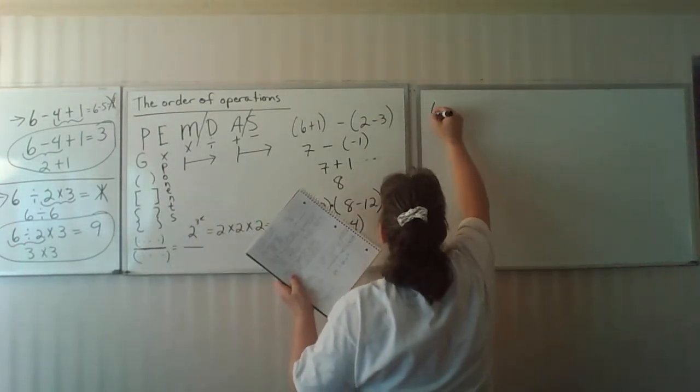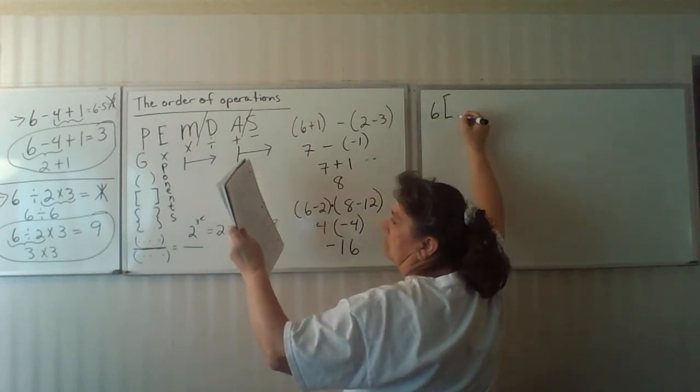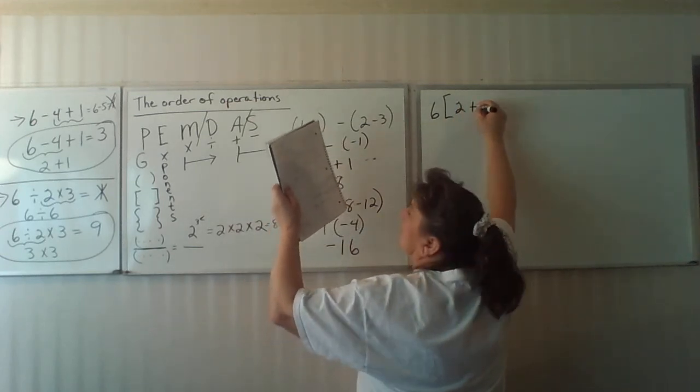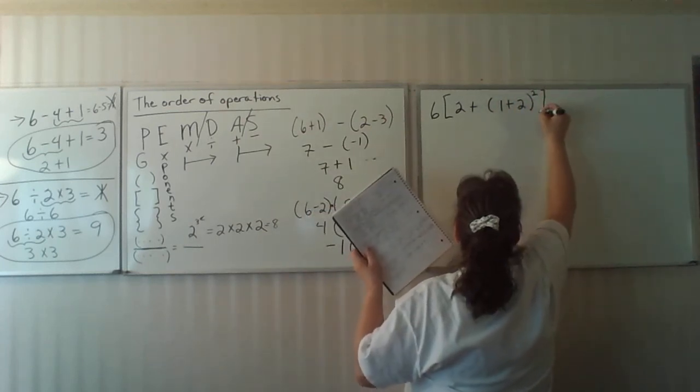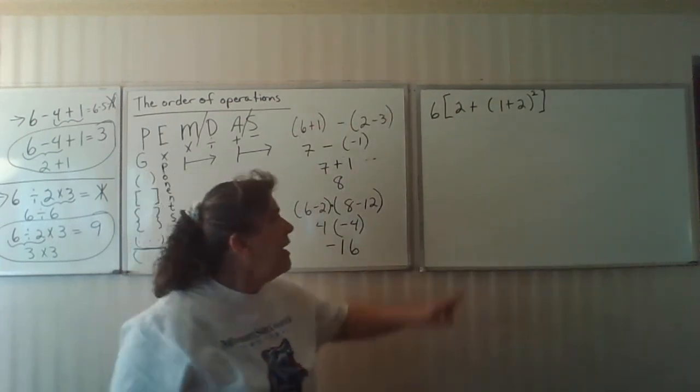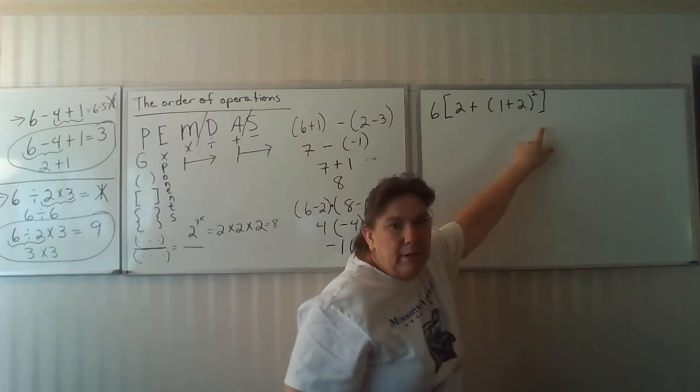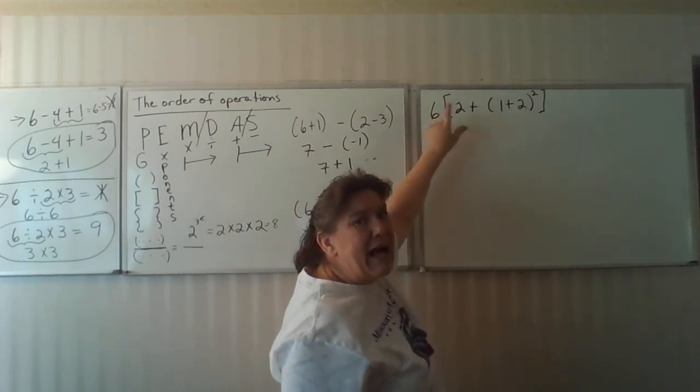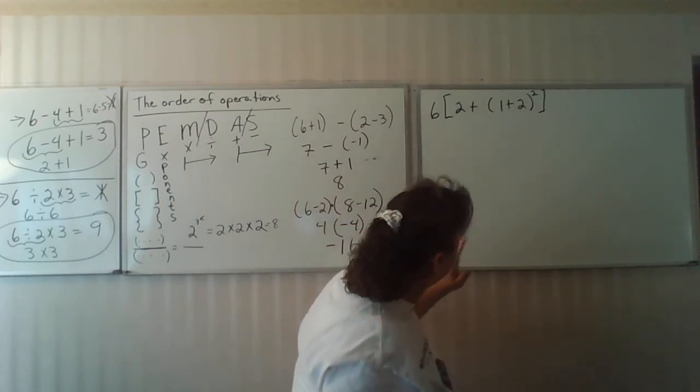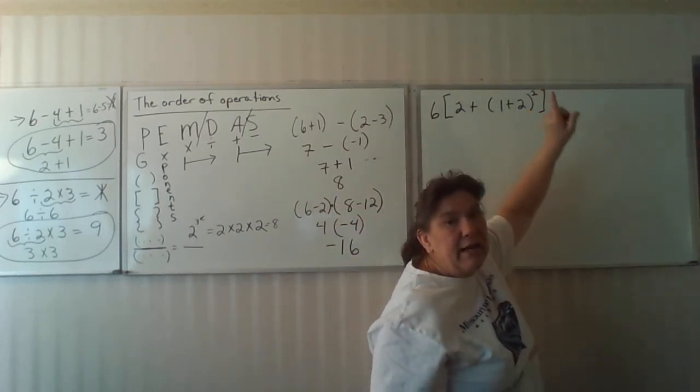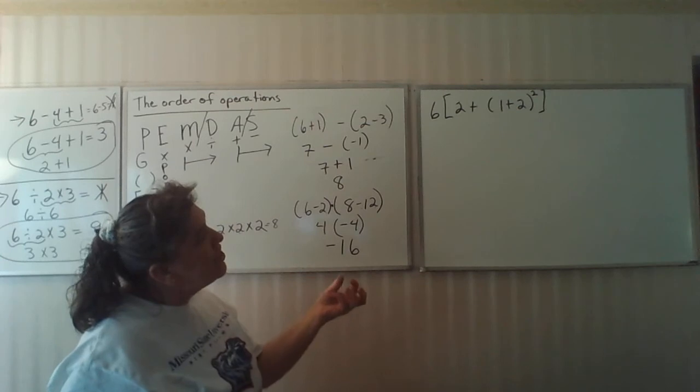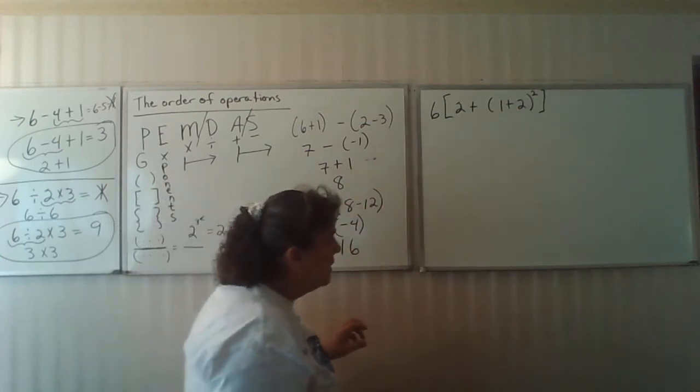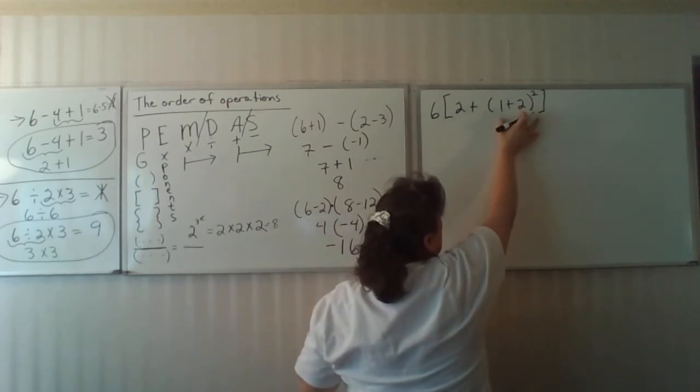Now let's look at things that are a little more complex. What if I have something like this? Now notice I have a grouping symbol inside another grouping symbol. I have a multiplication here, but it's outside all the grouping symbols. And I have a square and it's outside the grouping symbol. So the first thing I have to do on a problem like this is start in the innermost grouping symbol. So my innermost grouping symbol is my 1 plus 2, which is a 3. Since it's not a negative, I'm going to write it as a positive 3.